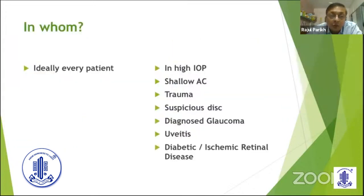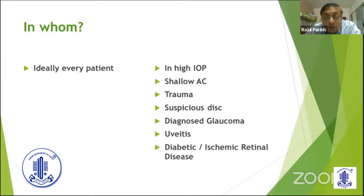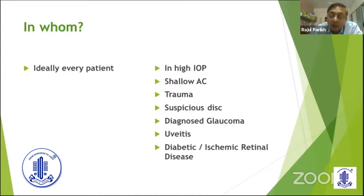Every patient should have gonioscopy ideally. But if you are too busy in private practice and don't have time for gonioscopy in every patient, then at least in all patients whose IOP is high, or Van Herrick is less than one-fourth, if they give a history of trauma, if the disc is suspicious, if somebody has been diagnosed with glaucoma and comes for a second opinion, patients with uveitis, diabetes, or ischemic retinal diseases — they must have gonioscopy.